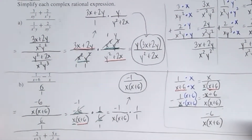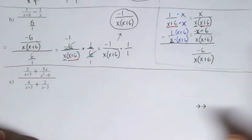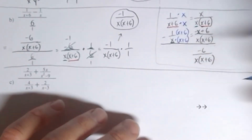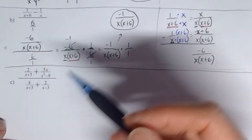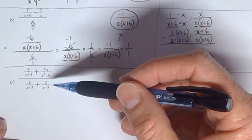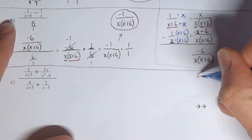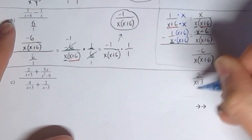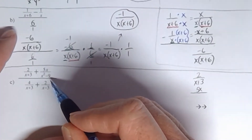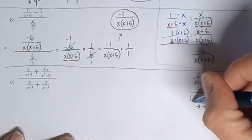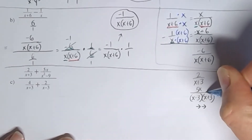Now as we proceed on to problem C, more of the same. This problem is a little bit more involved as far as finding the LCD, but mostly the same process. We need to make the numerator and denominator into a single fraction, meaning we need to add the fractions together in both the top and bottom. In the numerator we have 2 over x plus 3, and then 5x over x squared minus 9. I'm going to go ahead and factor x squared minus 9 right now, because whenever I have more than one term in my denominators I need to do that in order to find the LCD.